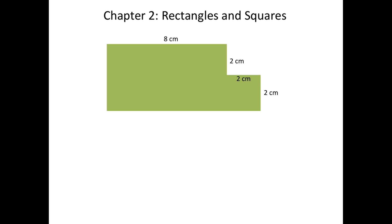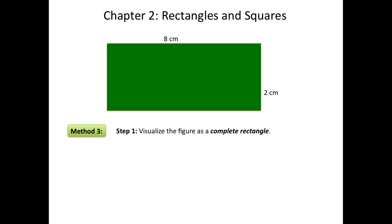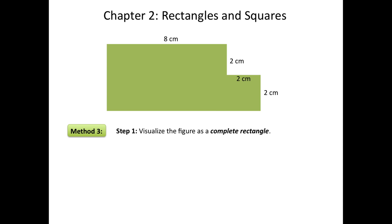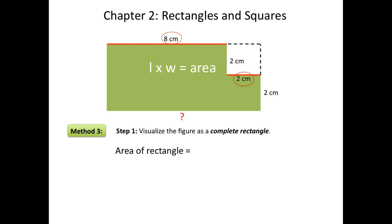There's one more way we could have solved this problem. Let's discuss method 3. To solve using the third method, we need to visualize this figure as a complete rectangle, as seen here in forest green. We can illustrate this on paper by drawing a dotted line to show a complete rectangle. To solve using this method, we need to find the whole rectangle and then take the unshaded part away. We'll find the area of the whole rectangle by multiplying the length times the width. The length can be found by adding 8 plus 2 — the length is 10 centimeters. The width can be found by adding 2 and 2 — the width is 4 centimeters. So the area of the whole rectangle is 10 times 4, or 40 centimeters squared.